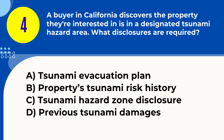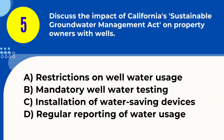Question 4. A buyer in California discovers the property they're interested in is in a designated tsunami hazard area. What disclosures are required? A. Tsunami evacuation plan B. Property's tsunami risk history C. Tsunami hazard zone disclosure D. Previous tsunami damages. Answer: C. Tsunami hazard zone disclosure. Explanation: In California, sellers must disclose if a property is located within a designated tsunami hazard area.